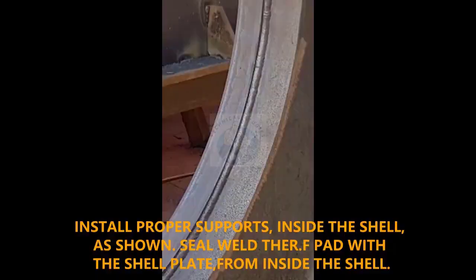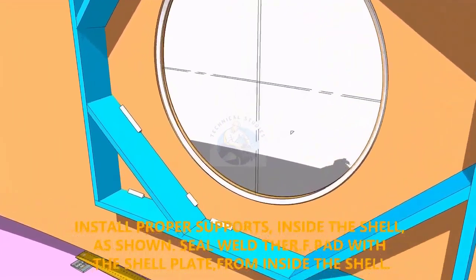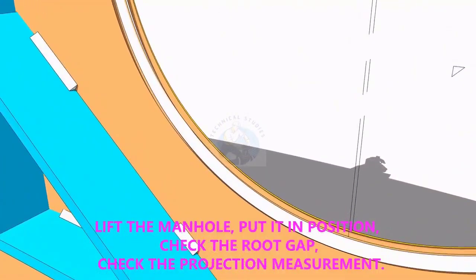Provide proper supports to control the distortion during welding. Weld a run on the joint between the shell plate and the pad plate.